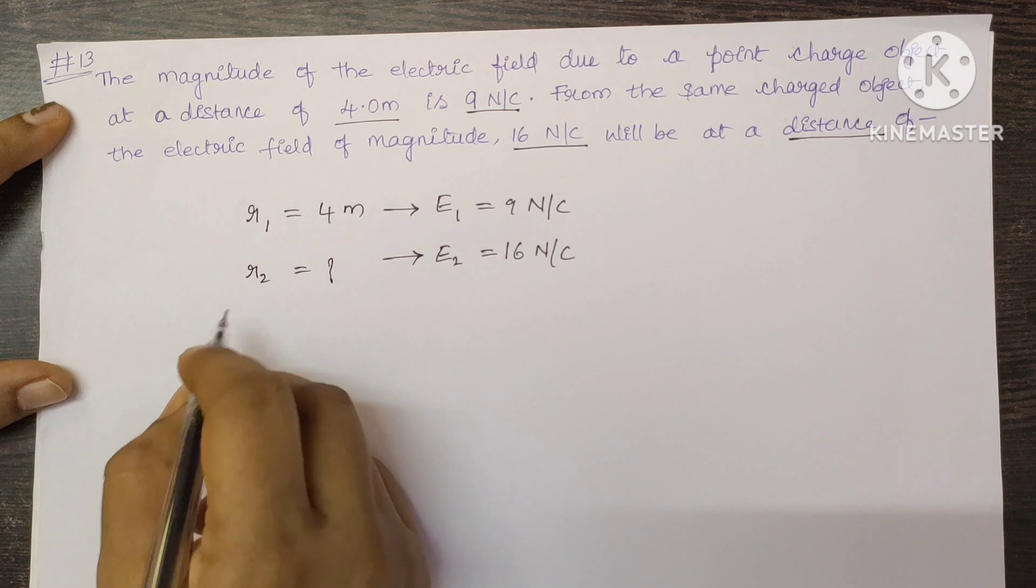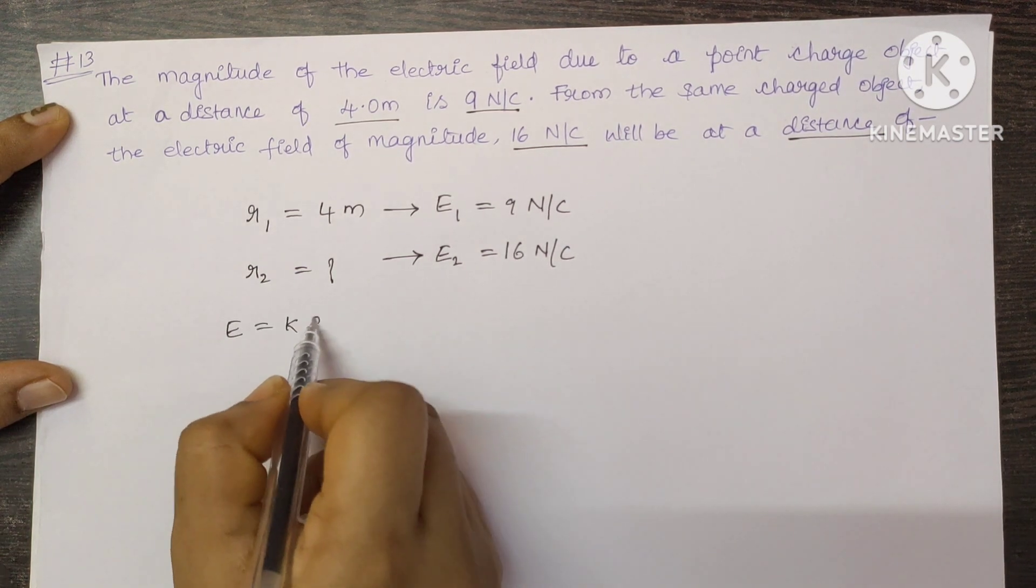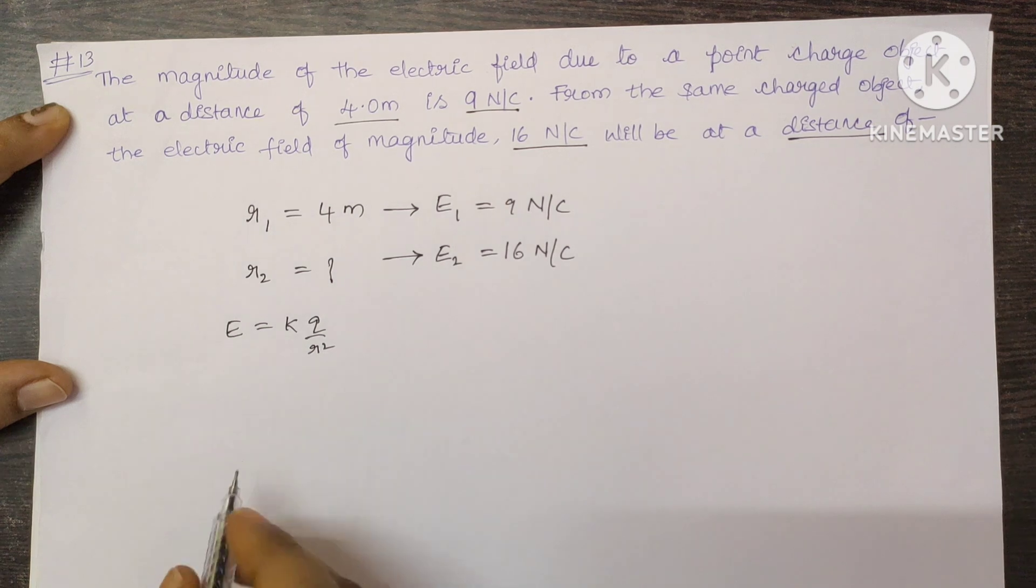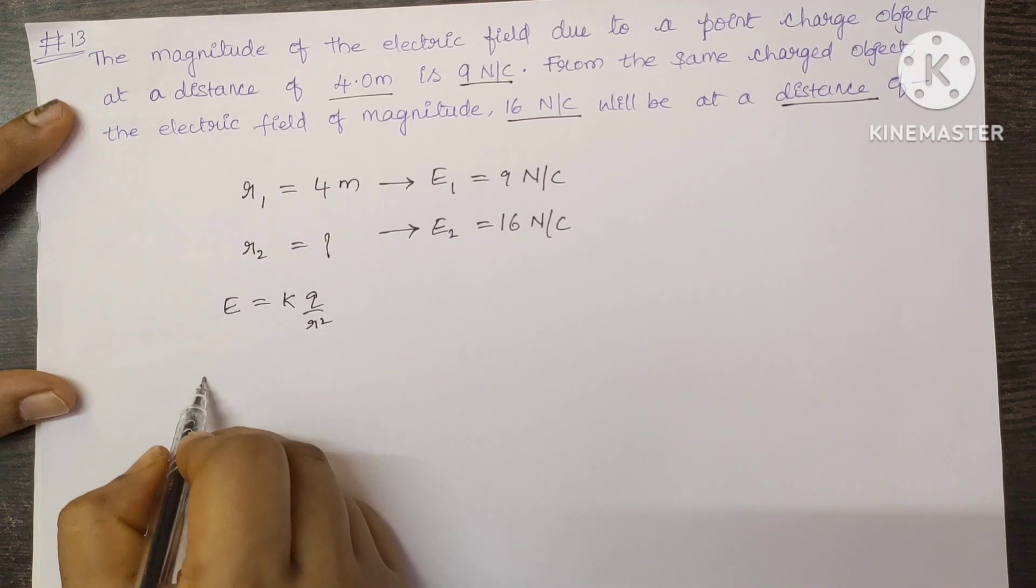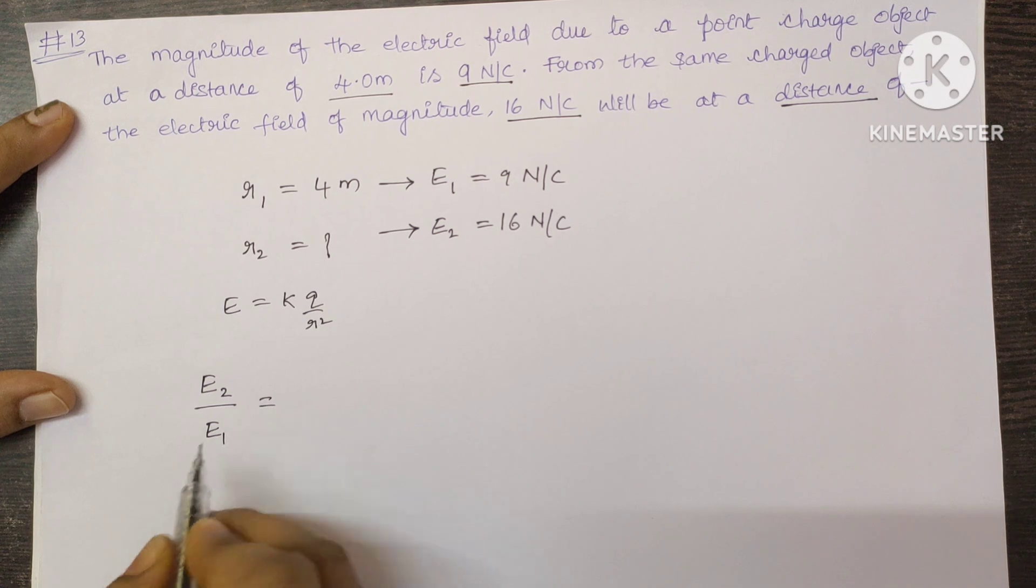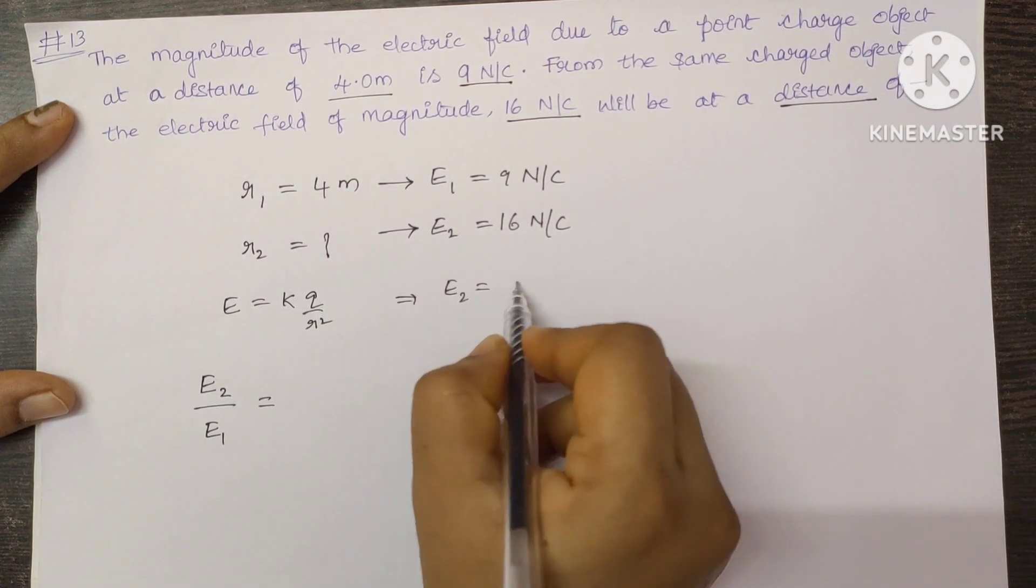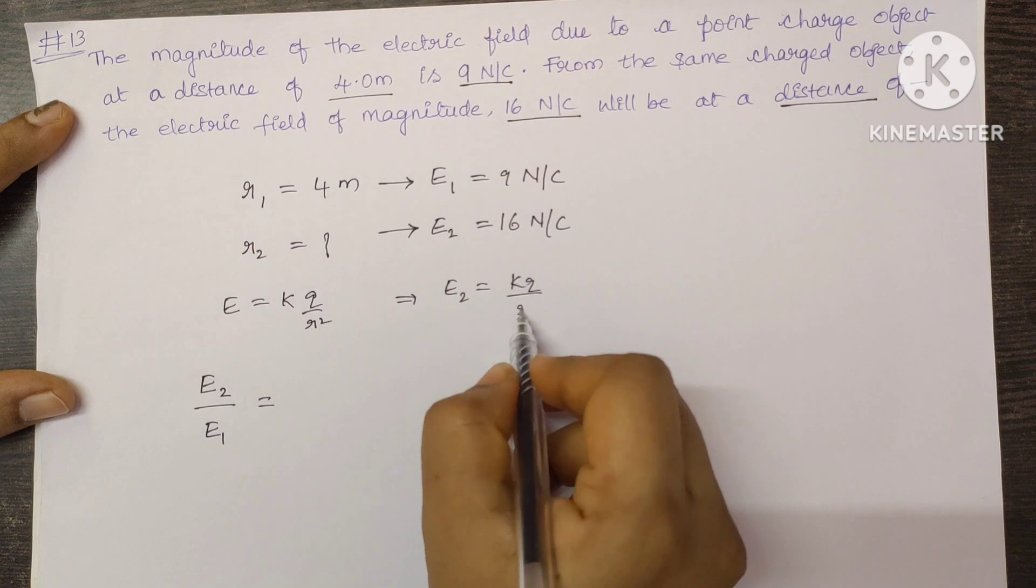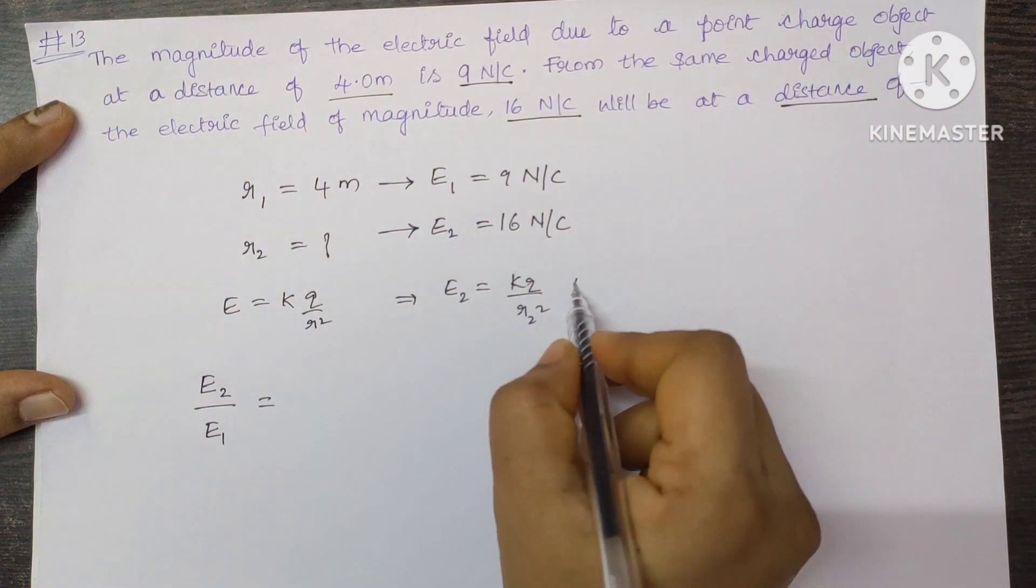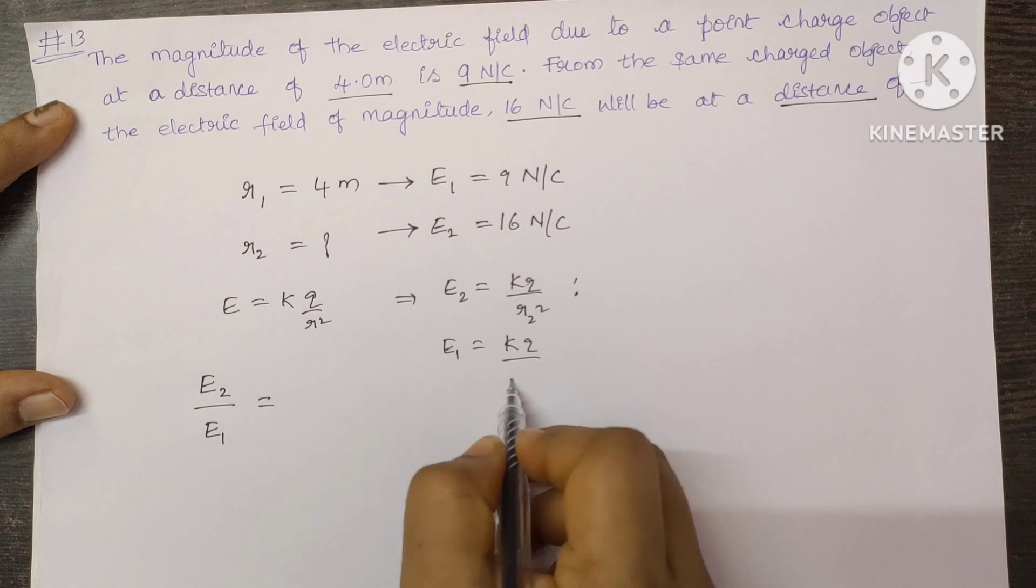We know that the formula for electric field due to a point charge is E equals KQ by R square. So let us find E2 by E1. If you write a formula for E2, it is equal to KQ by R2 square, and the formula for E1 is equal to KQ by R1 square.